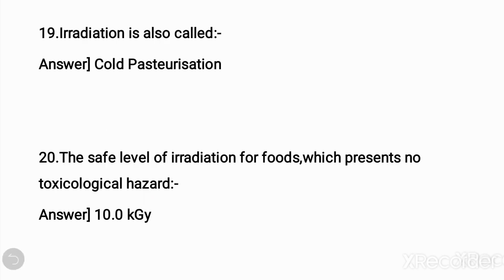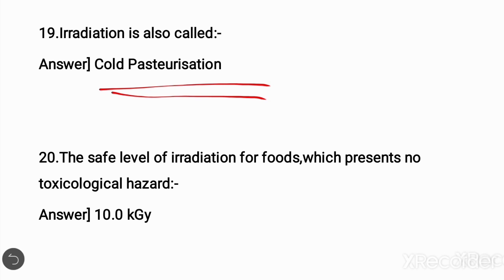Nineteenth question: irradiation is also called? Answer: cold pasteurization. Twentieth question: the safe level of irradiation for foods which presents no toxicological hazard is? Answer: 10 kilograys.